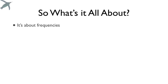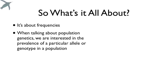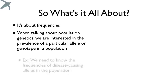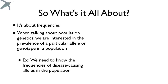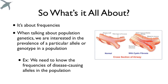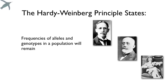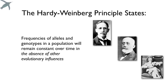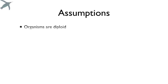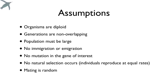So what is all this about? This is all about frequencies — specifically the frequencies of a particular allele or genotype in a population. There are tons of applications; one example is determining the frequency of disease-causing alleles in a population, such as the allele that causes cystic fibrosis. What the Hardy-Weinberg principle states is that the frequency of alleles and genotypes in a population will remain constant over time, in the absence of other evolutionary influences. There are a lot of assumptions, and some of them might strike you as almost impossible — and you'd be right.